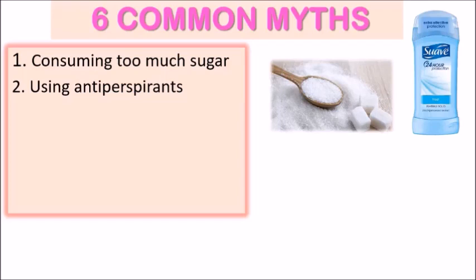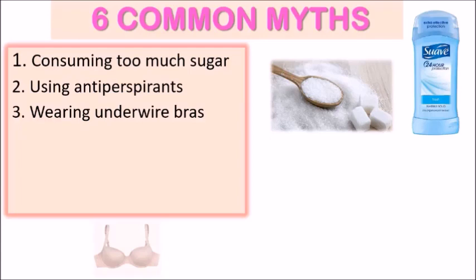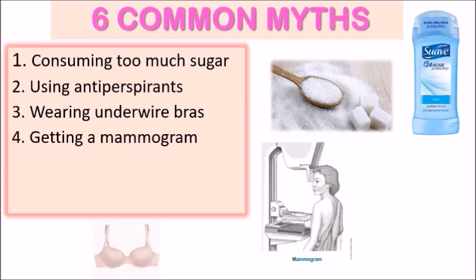Second, using antiperspirants does not cause breast cancer. Many people believed these stop sweating and therefore the removal of toxins from the body, which could lead to clogged glands. A major concern has been aluminum-based antiperspirants, which many believe are absorbed into the lymph nodes and can increase the risk of breast cancer, but there is no evidence to prove this. Third, wearing underwire bras was thought to restrict lymphatic fluid circulation and lead to toxin build-up in the tissue, but no evidence supports this. Fourth, getting a mammogram exposes you to very little radiation that is very unlikely to cause any harm — mammograms do not cause breast cancer.